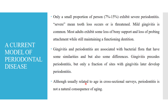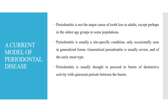Although usually related to age in cross-sectional surveys, periodontitis is not a natural consequence of aging. Periodontitis is not the major cause of tooth loss in adults, except perhaps in the oldest age groups in some populations. Periodontitis is usually a site-specific condition, only occasionally seen in generalized forms. Generalized periodontitis is usually severe and of the early onset type. Periodontitis is usually thought to proceed in bursts of destructive activity with quiescent periods between the bursts.